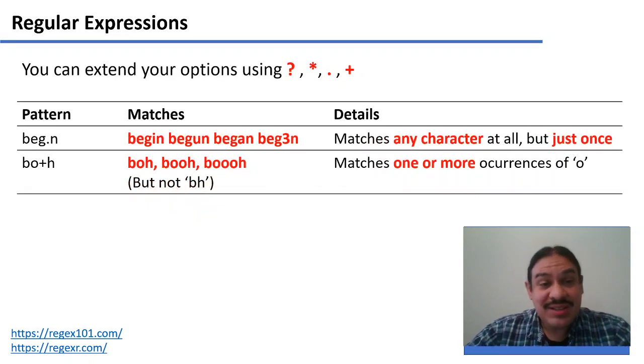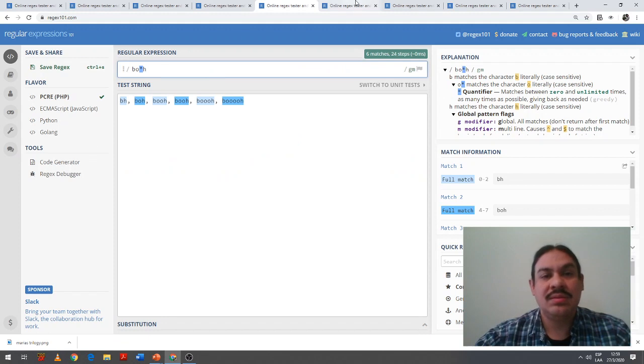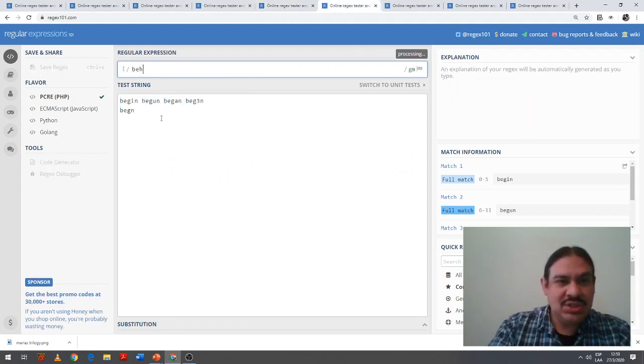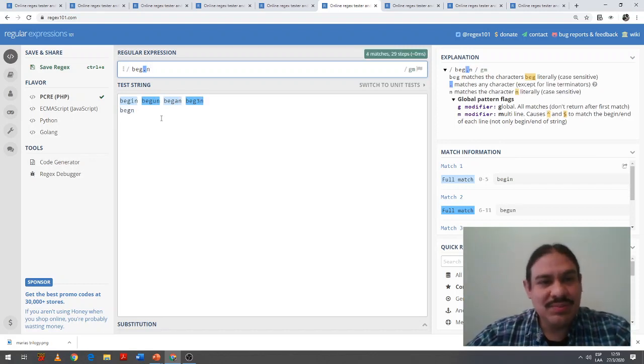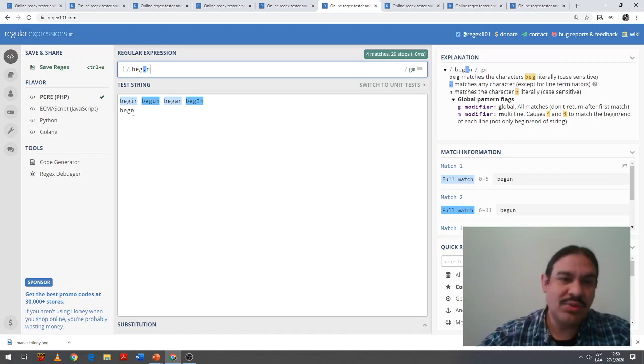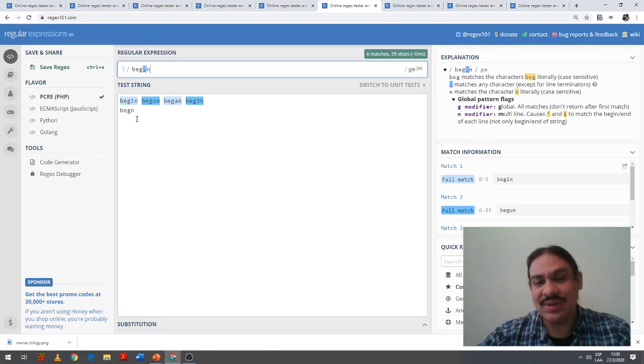The period, the dot, will match any character, but just once. So B-E-G dot N matches begin, begun, began, but it wouldn't match B-E-G N, because you need at least one character there to occur once. B-E-G dot N matches the B-E-G literally, then any character once, then the letter N. So the B-E-G N is not marked as an instance of the regular expression.